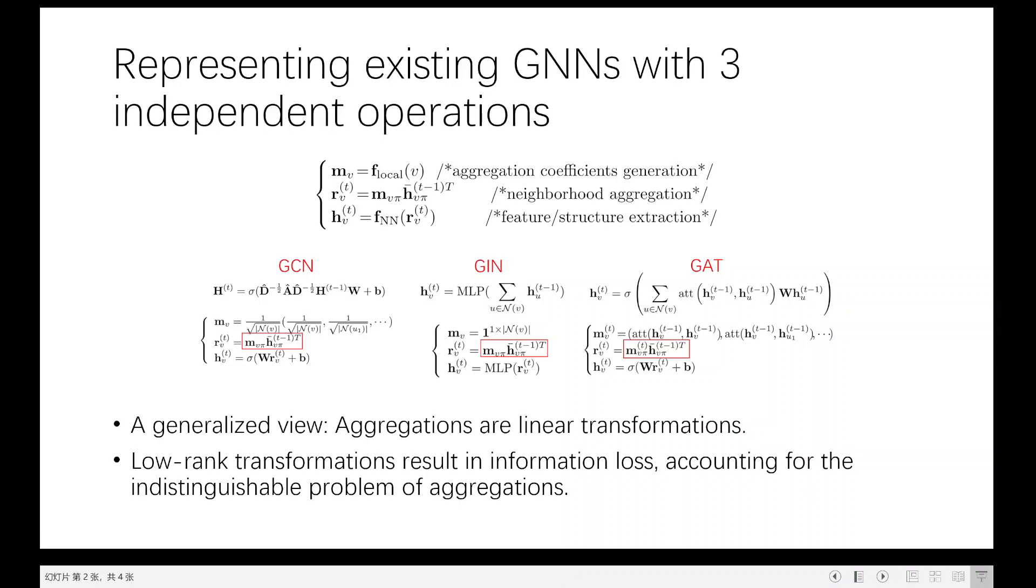The three-stage representation provides us with a generalized view. Aggregations can be considered as linear transformations where input features are transformed by aggregation coefficient matrices. Different aggregators, sum, mean, etc., correspond to different coefficient matrices.